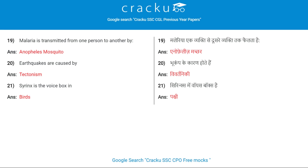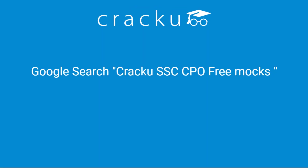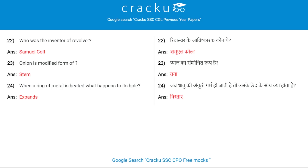Earthquake is caused by tectonism. Syrinx is the voice box in birds. Who was the inventor of the revolver? Samuel Colt. Onion is a modified form of stem.